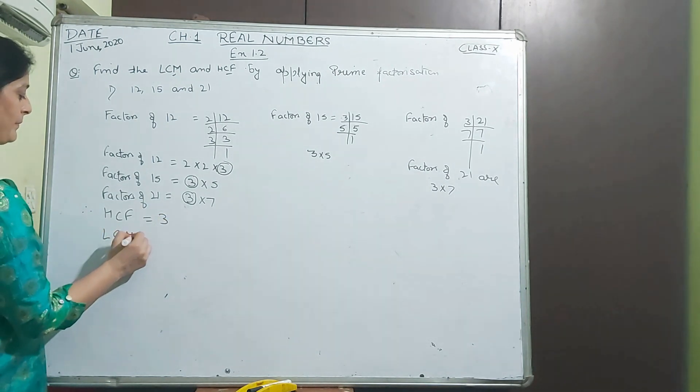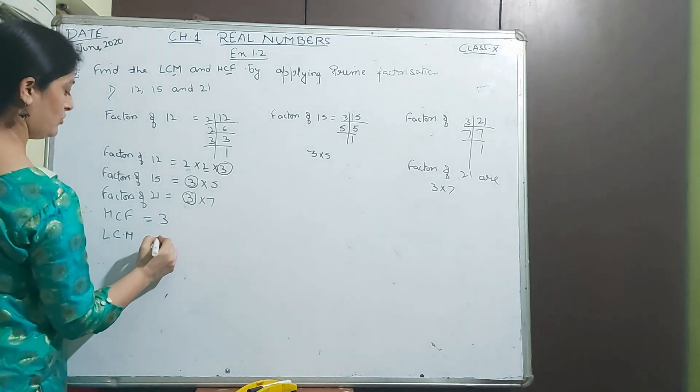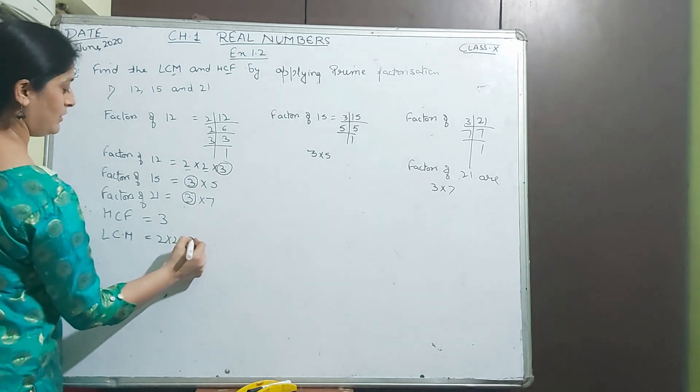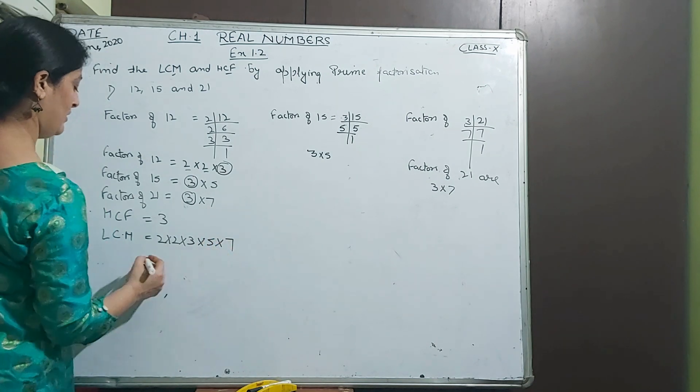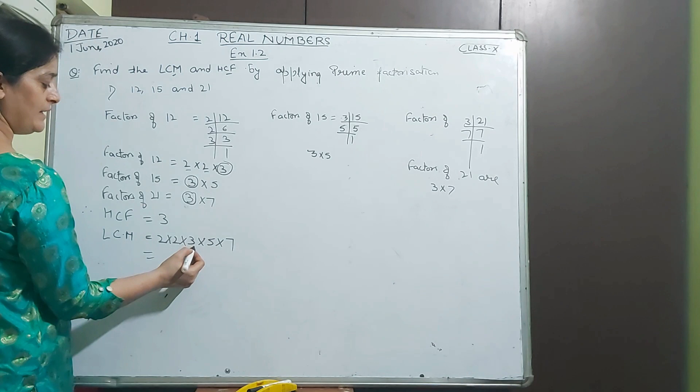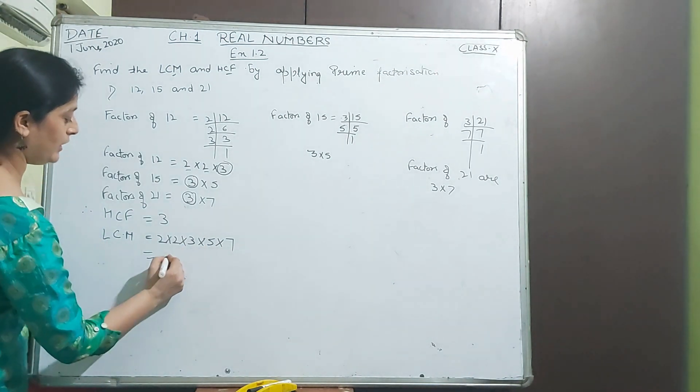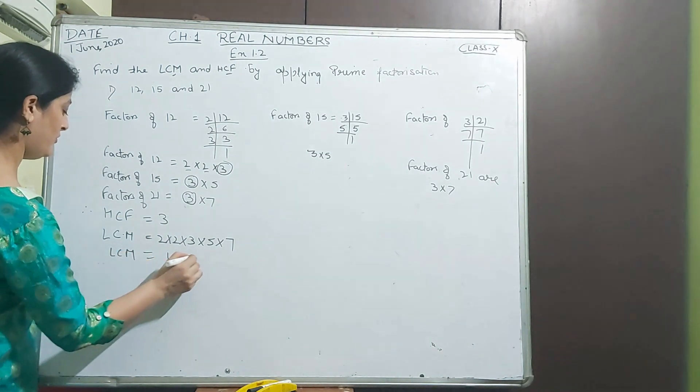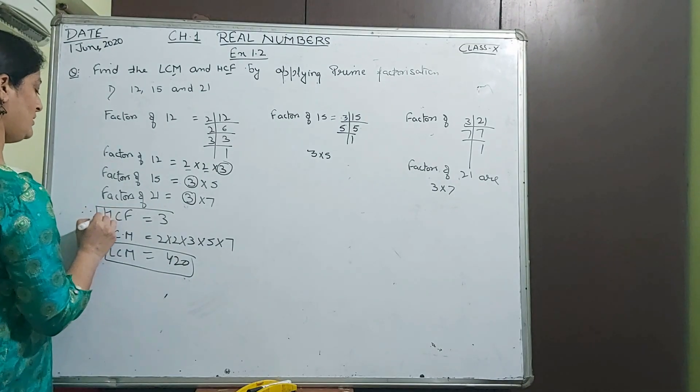Now LCM. Here 2, 2, 3 is common. We take 3 only one time. Next 5, next 7. Multiply these numbers. 2 times 2 is 4, times 3 is 12, times 5 is 60, times 7 is 420. So LCM is 420 and HCF is 3.